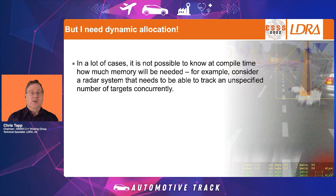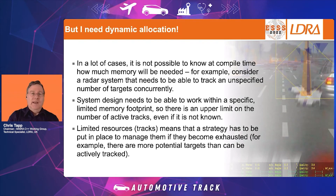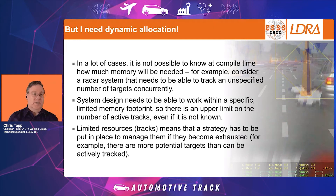For example, if we have a radar system that needs to track an unspecified number of targets concurrently, we may not have an upper bound on memory that causes a problem when initiating target tracks. The system design needs to work within a specific limited memory footprint, so there may need to be an upper limit on the number of active tracks. There will have to be some constraint within the design to limit the number of tracks, and a strategy must be put in place to manage resources if they become exhausted.